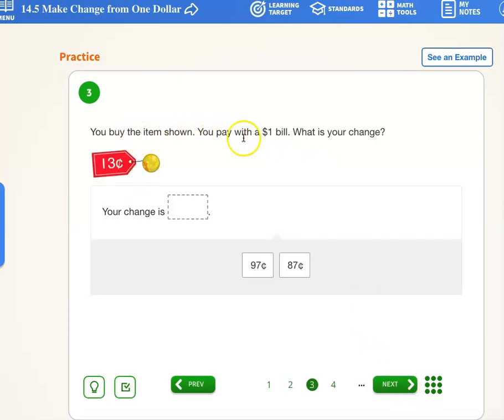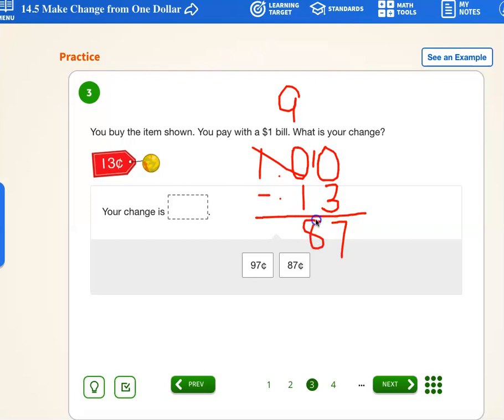Let's go to our next problem. You buy the item shown. You pay with a dollar. What is your change? Well, let's give it a try. We have $1. This is the dollar. This is the cent. So there's zero cents. How much are we taking away? Well, we're taking away 13 cents because we want to buy this nice little ball. 10 becomes nine. You take that one we borrowed and we put right here. 10 take away three is seven. Nine take away one is eight.